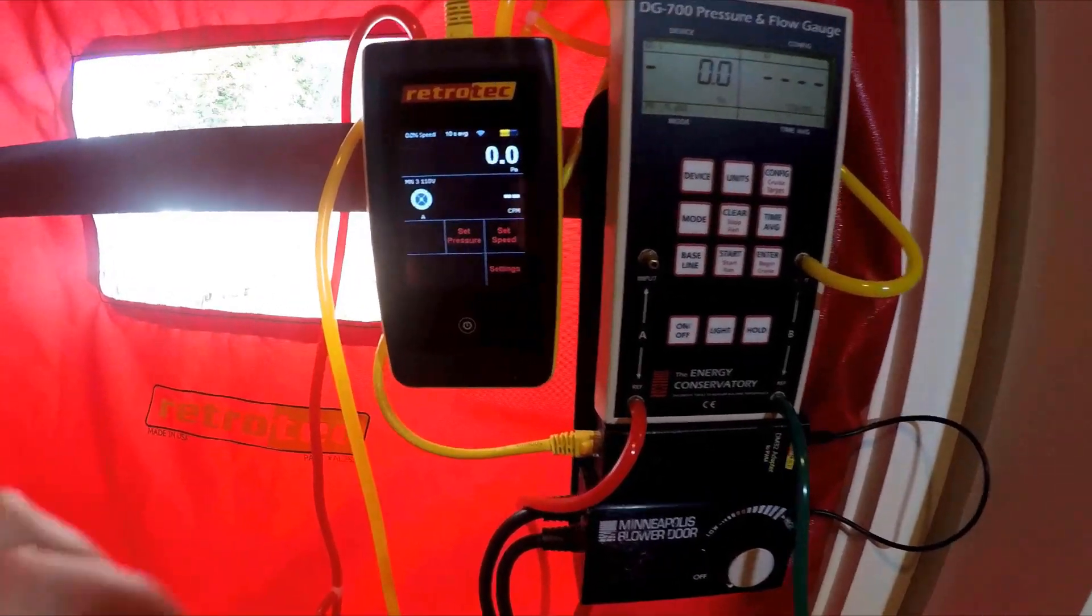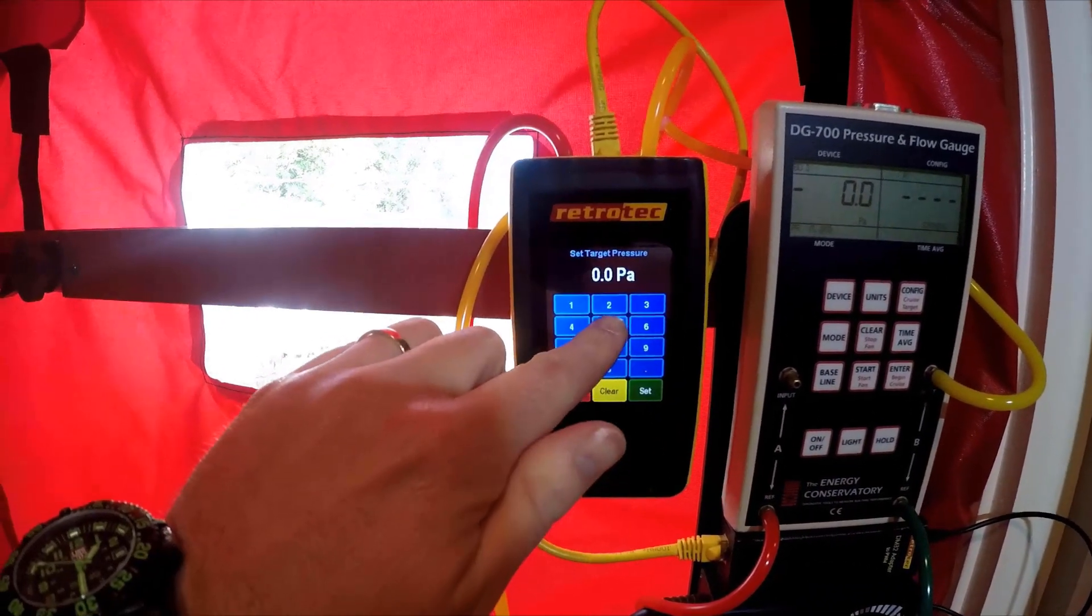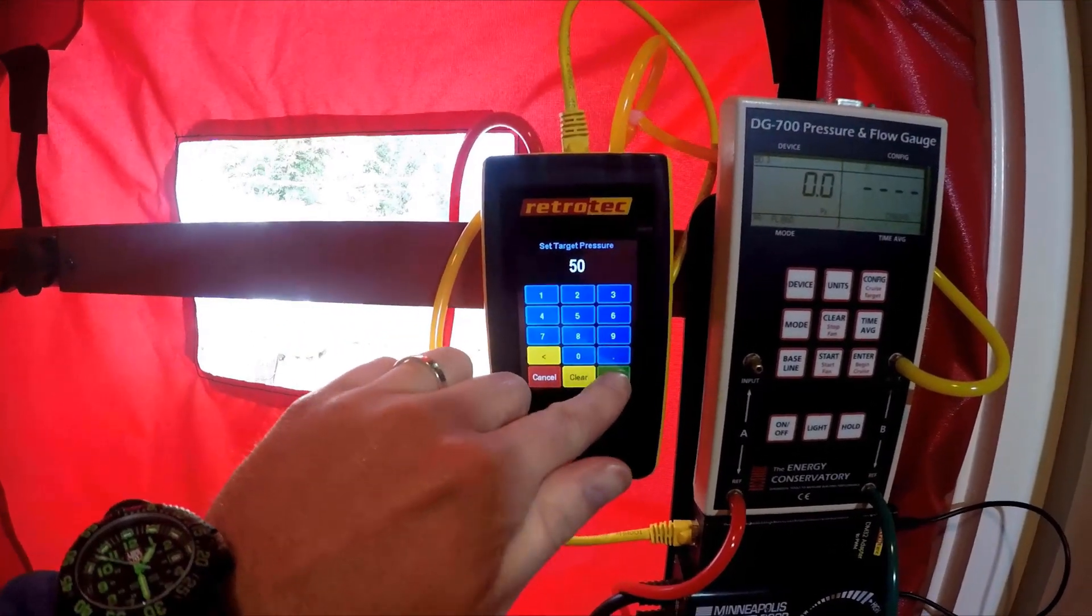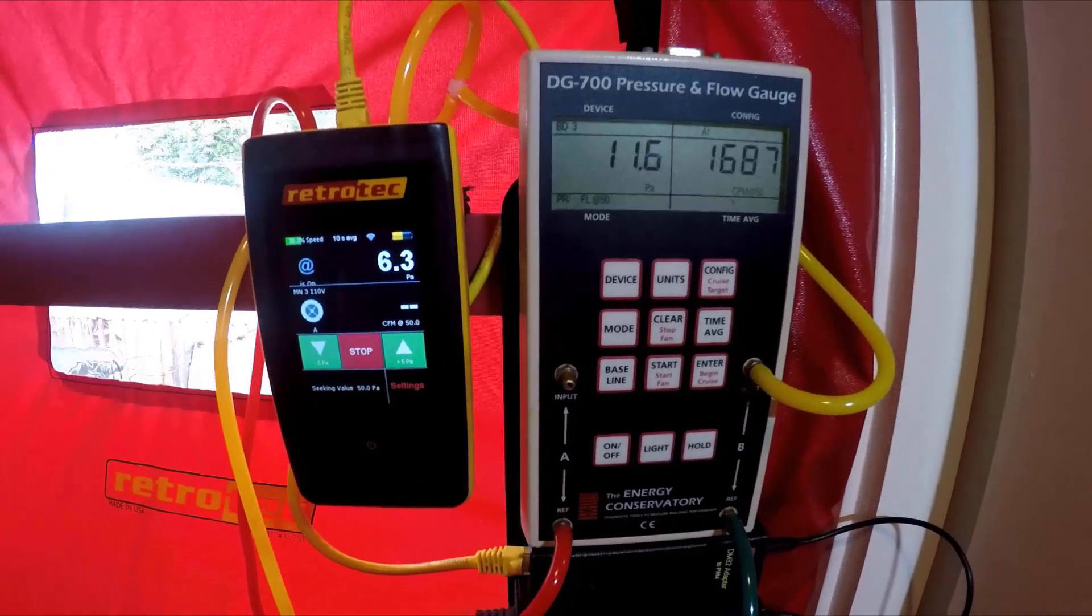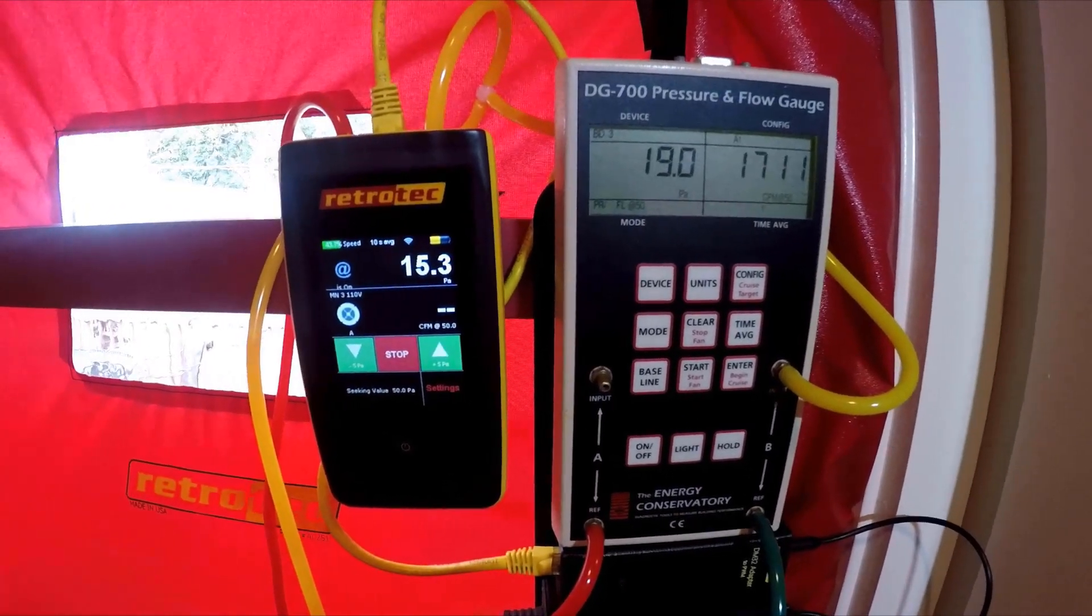Now we'll run the test again with the tubing connected to the reference port on channel B of the DG700. That way that port is reading to outside instead of the pressurized space.